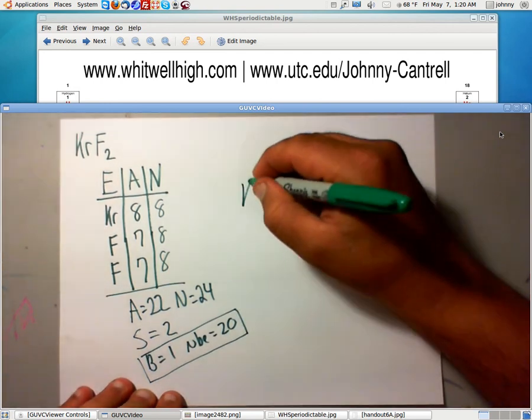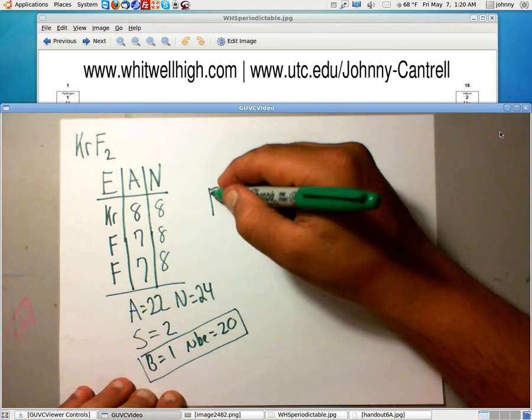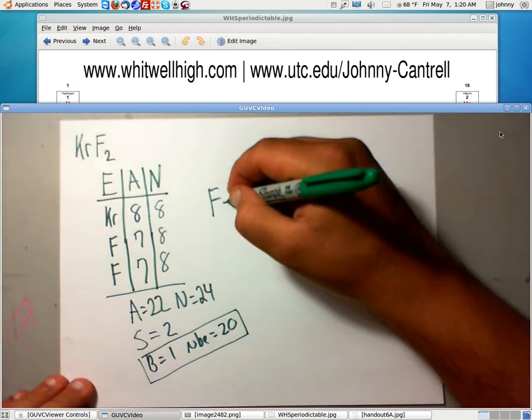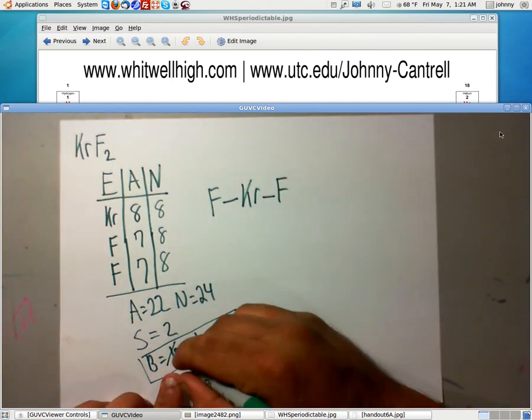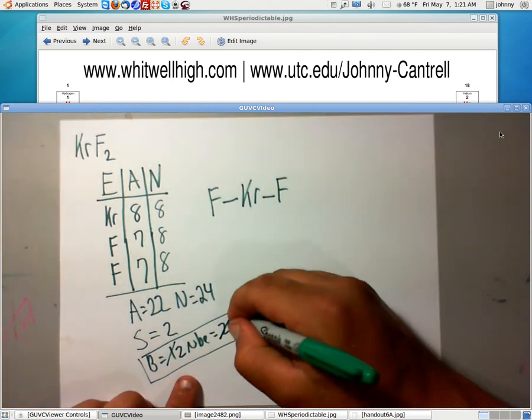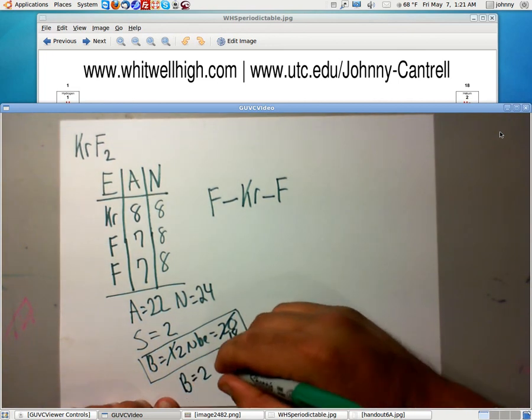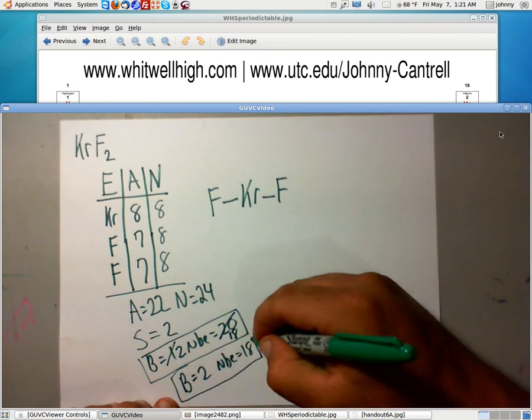Kr is going to be our central atom with 2Fs. So there's 1, 2. Now I need a minimum of 2 bonds to attach things. Do I have at least 2? Nope, sure don't. I've only got 1. Let's change the 1 to 2. So we need a pair of 2 electrons, so that changes it to 18. So bonds should be really 2. Non-bonding electrons should be 18. So this is what I should really use.